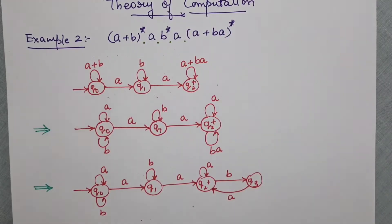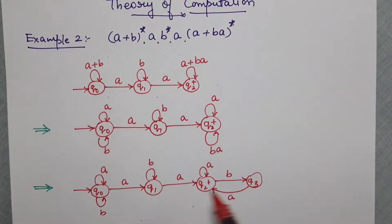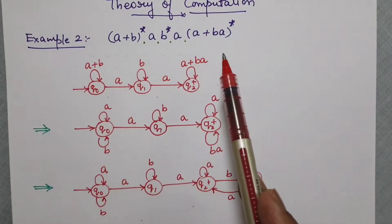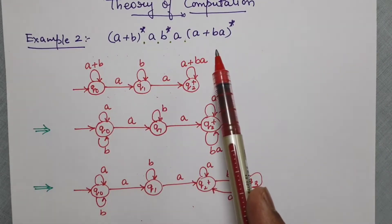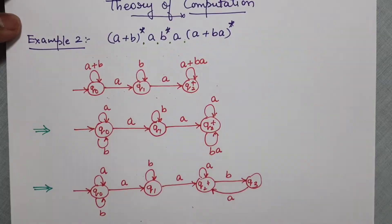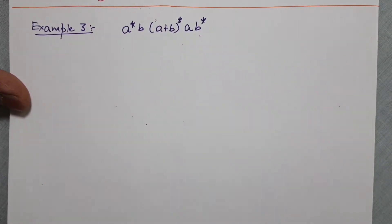So 'ba' will have this transition added. My dear friends, this is my non-deterministic finite automata for the given regular expression. This is obviously non-deterministic — we can apply the approach of converting NFA to DFA, or we can also directly draw the DFA, but that requires a lot of practice and expertise, which we will do at a later time.